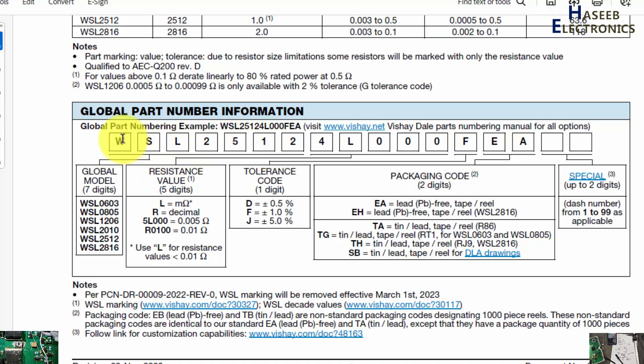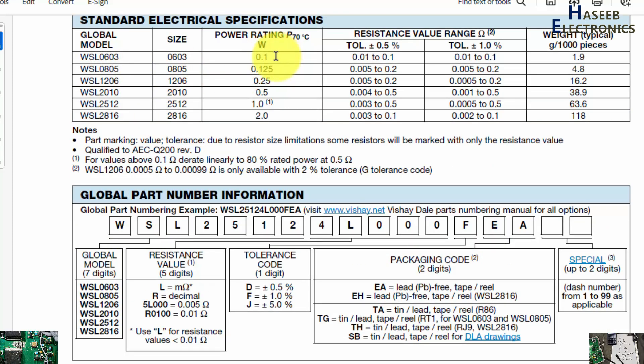WSL2512, it is global part number. The package model, because these resistors are determined by its package size, length, width. In our case this resistor, its part number is WSL2512. If 0603, that has different watt rating: 0603 is 0.1 watt, 0805 is 0.5 watt, 1206 is 0.4 watt, 2010 half watt, 2512 1 watt, 2816 2 watt. So this is its length and width.